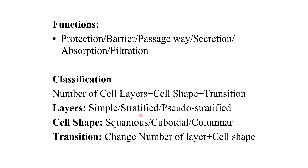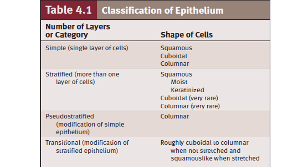Transitional epithelium cells become flat when there is a large volume of urine and recoil to columnar or cuboidal when urine is passed out, with cell layer number also increasing. They are present in the urinary bladder, kidneys, and ureters. Simple epithelium can be simple squamous (single flat layer), simple cuboidal, or simple columnar. Epithelial tissues are given two names — one for cell shape and one for number of layers.